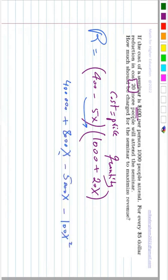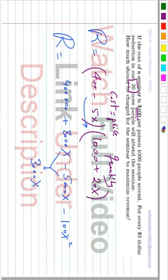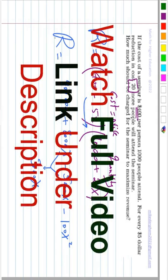In your course you have taken marginal revenue, so you can find the marginal revenue to get the maximum. We have to find the value of x that makes the revenue maximum — find the value of x that makes the marginal revenue equal to zero.